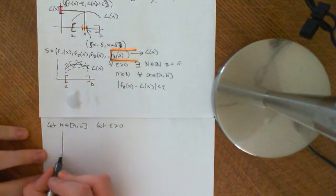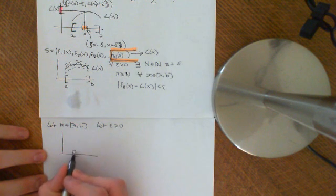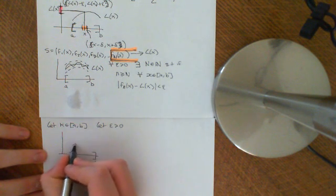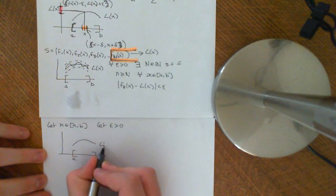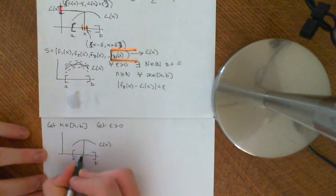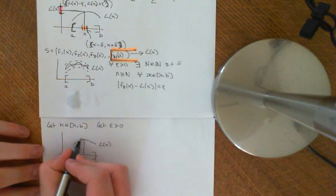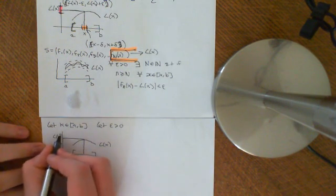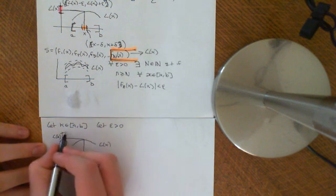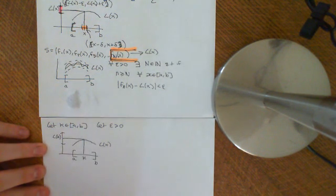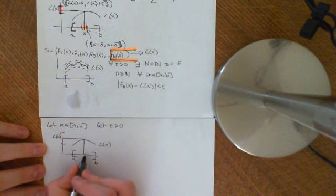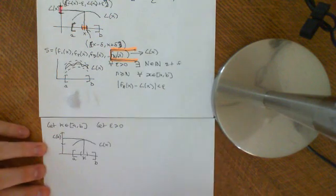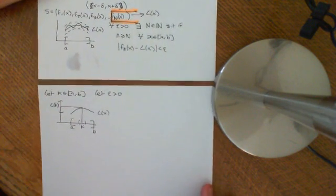Let's draw the picture out again. We have some interval AB and some limit function L(x). We've picked some arbitrary point k in the interval AB. We've said: take an arbitrary epsilon greater than zero, construct the epsilon interval around L(k), and I want to construct a delta interval around k such that that delta interval is completely mapped into the epsilon interval around L(k). We'll continue this discussion in the next video.